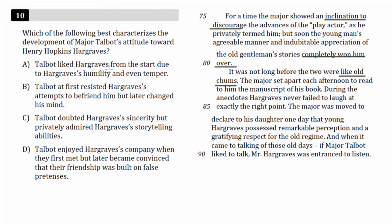Choice A: 'Talbot liked Hargraves from the start.' Automatically wrong — even if part of an answer choice is wrong, the whole thing is wrong. He never liked Hargraves from the start; he wasn't a fan from the beginning. We don't really need to read the rest, but 'due to Hargraves' humility and even temper' — this part is also wrong. So A is wrong.